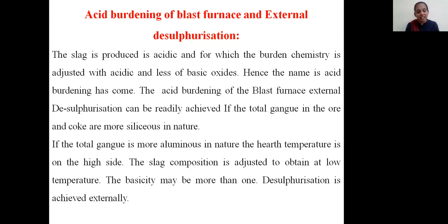Sulfur will be eliminated by purging calcium carbide, magnesia, and lime into the ladle containing the hot metal, so that sulfur will be eliminated in the form of calcium sulfide. This desulfurized pig iron is then sent to the steel making shop. That is called external desulfurization. Thank you.